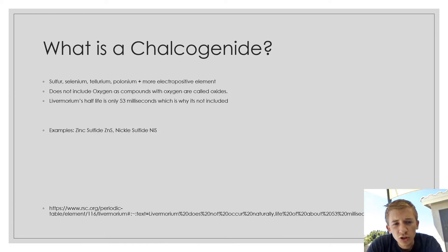A chalcogenide is made up of sulfur, selenium, tellurium, or polonium, plus an electropositive element, and does not include oxygen, which are called oxides. It doesn't include livermorium because of the half-life. Some examples of the chalcogenides are zinc sulfide and nickel sulfide.